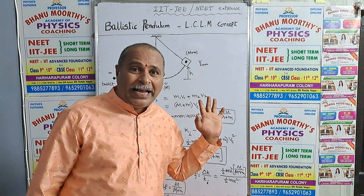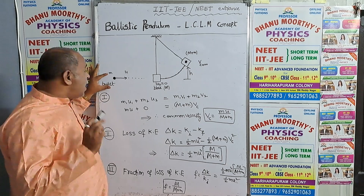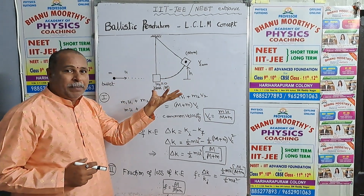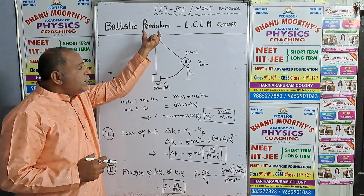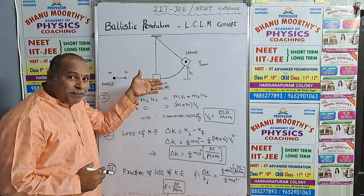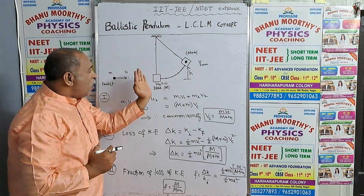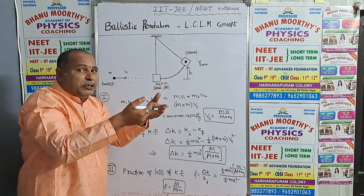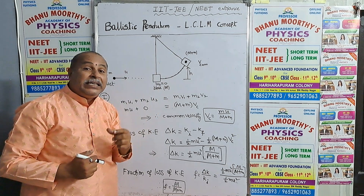Three concepts I am projecting in this video class number 5. This is the ballistic pendulum: a bullet of mass M, moving horizontally with velocity U, strikes a ballistic pendulum — a stationary block of mass capital M, which is suspended by a string of length L. Now this bullet is striking the ballistic pendulum, and after striking, the combination rises to a height H. The combined mass M plus m, because the bullet gets embedded into the block, penetrates into the block, and the system rises to a height H.